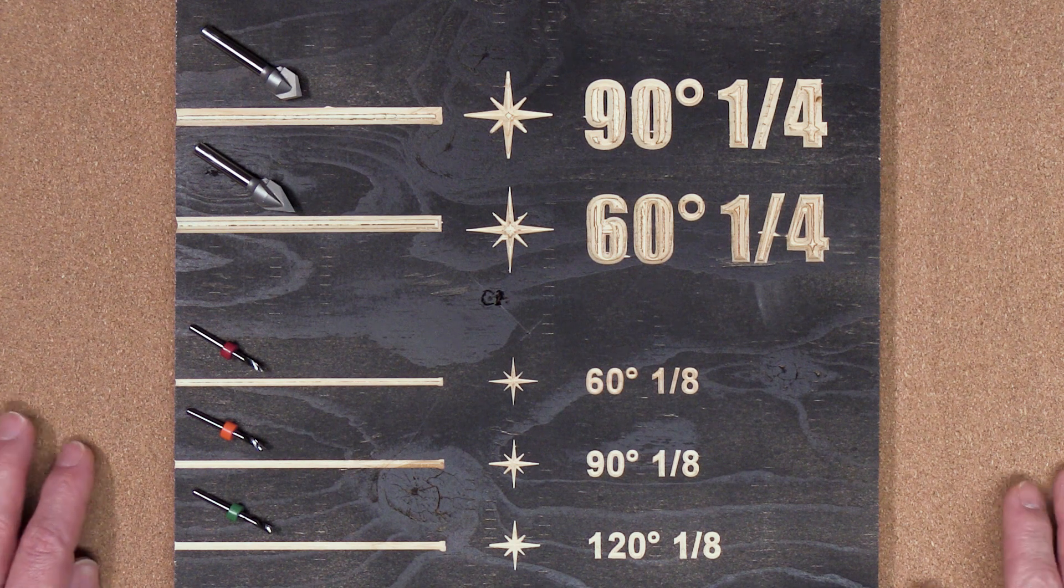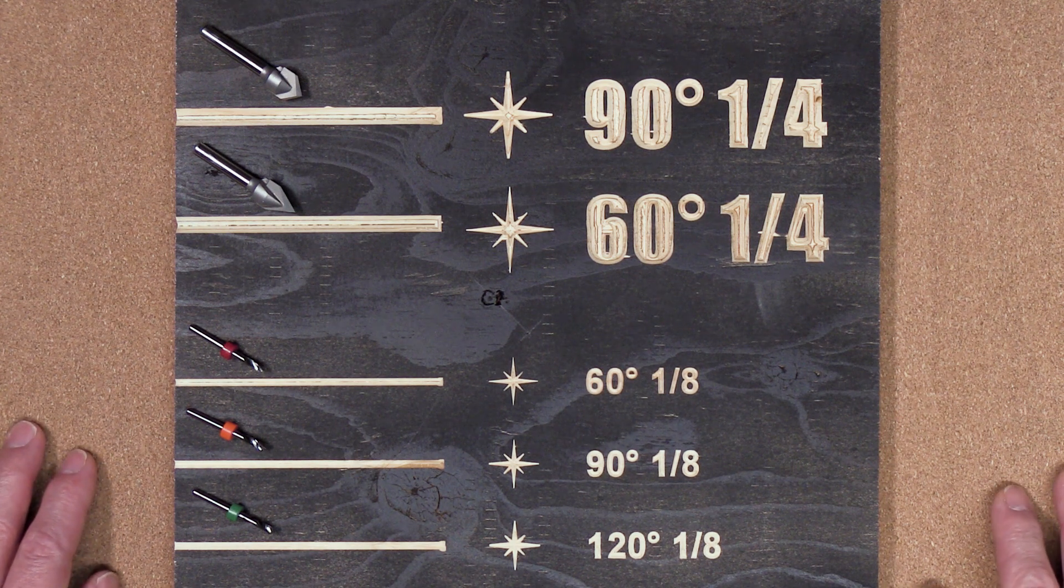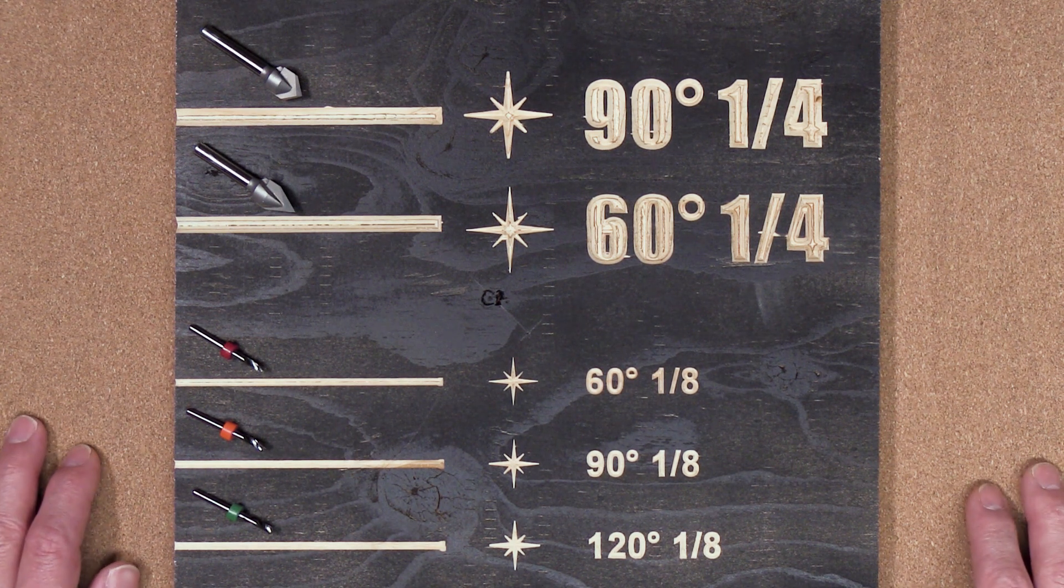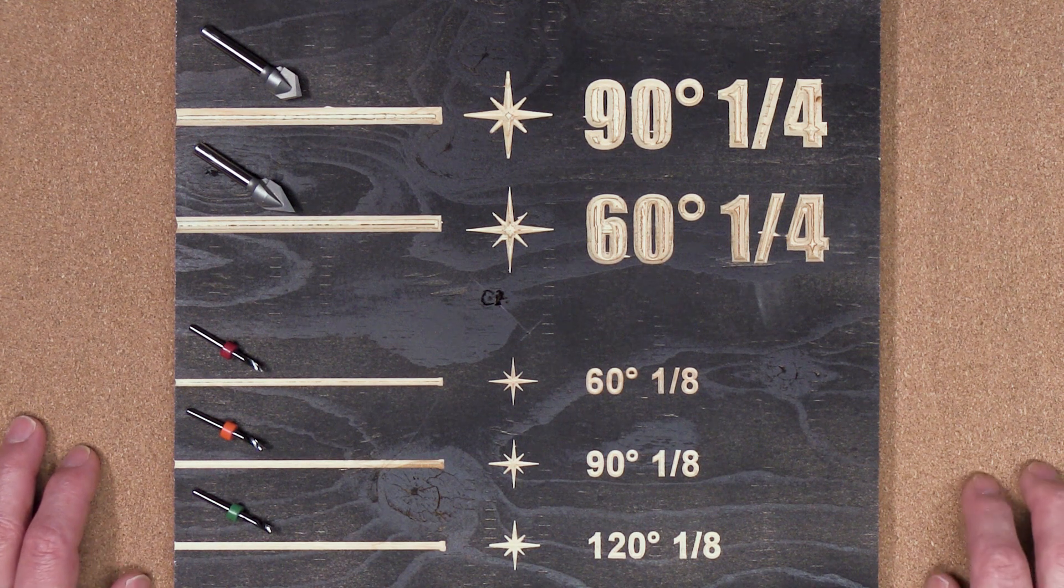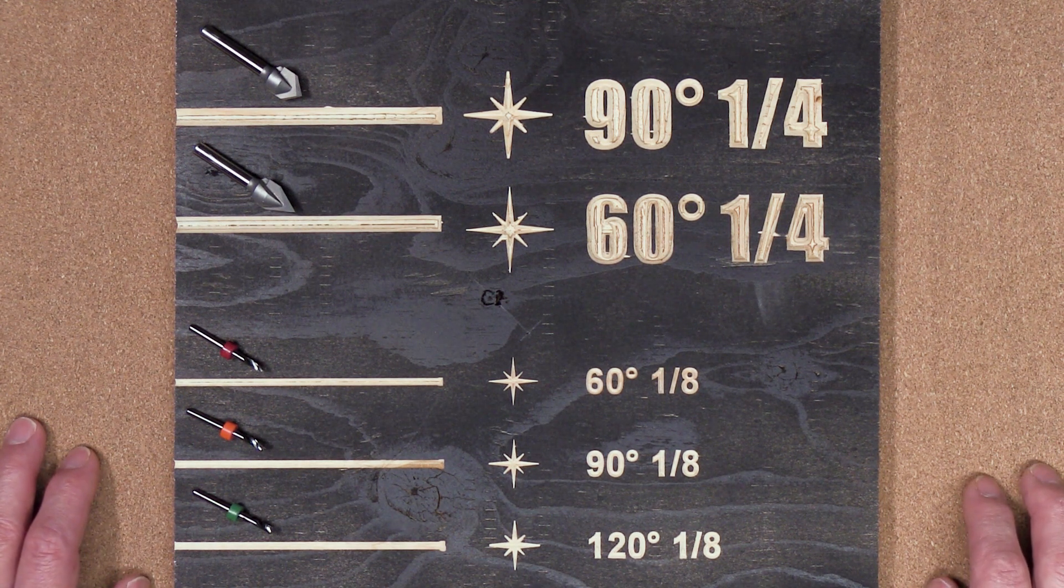Okay, let's get talking about V-bits. So V-bits are called V-bits for the obvious reason that they'll carve a V into your material.